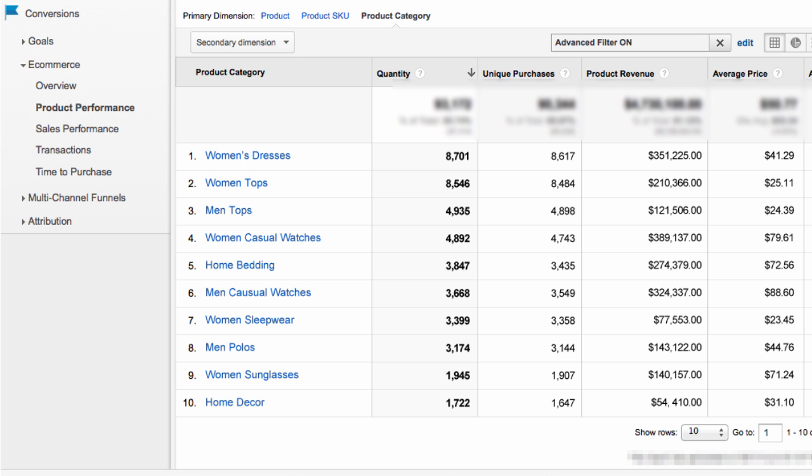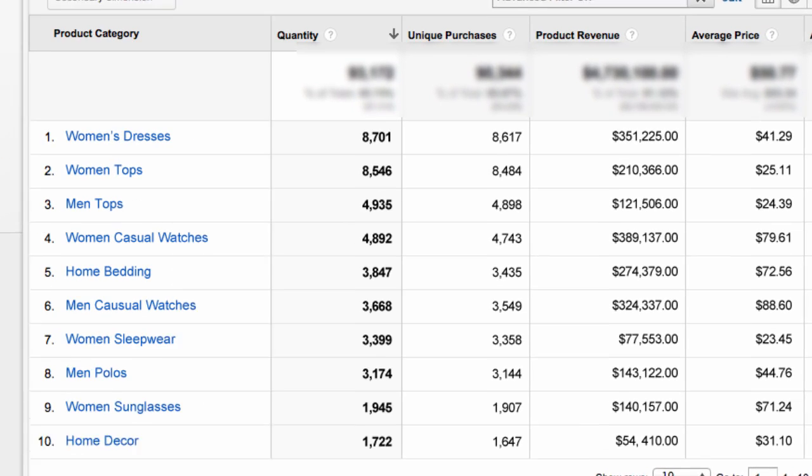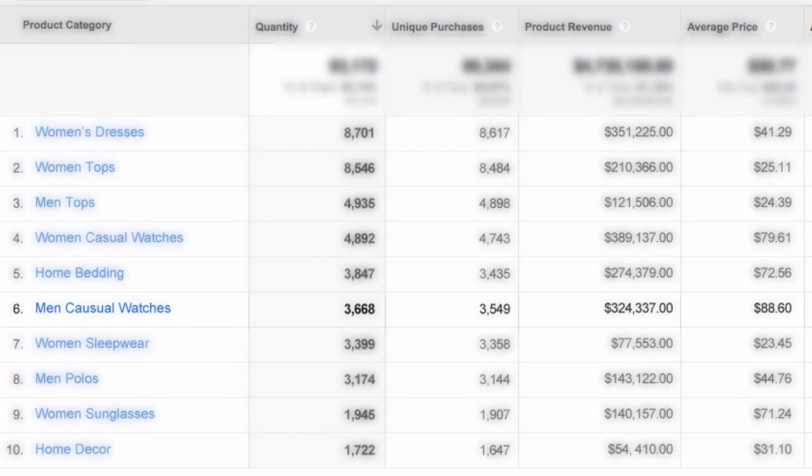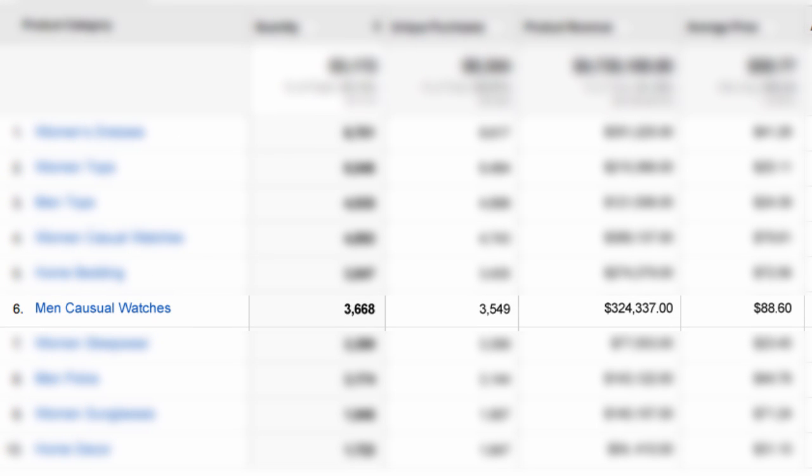To the product category level, you'll see here on the screen that we have some categories driving more revenue than others. For example, men's watches - these watches are pretty hot, driving a lot more revenue. You can also see that maybe the tops are not doing as well.